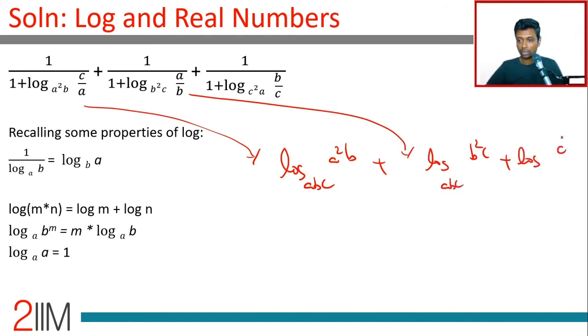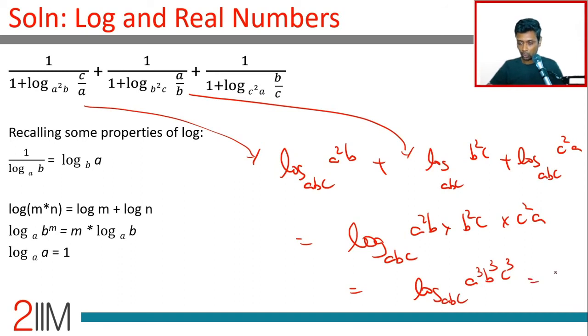plus log c²a to the base abc, which is log of a²b times b²c times c²a to the base abc, which is log of a³b³c³ to the base abc, which is 3.